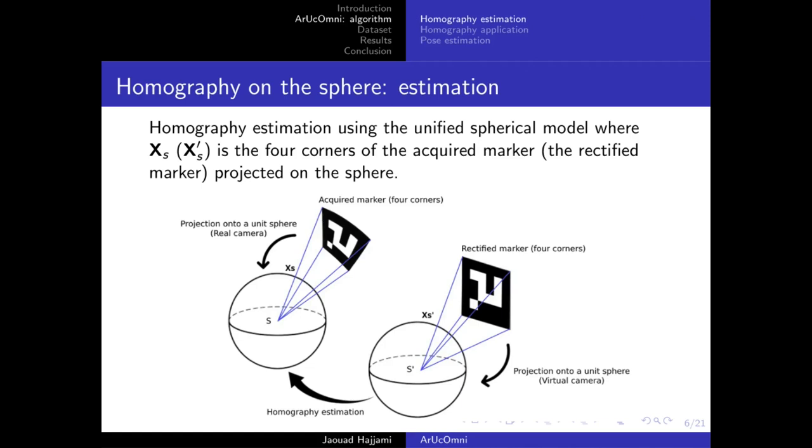For homography estimation, we have the rectified marker containing the canonical form of the marker, which is a new image with its own intrinsic parameters that we call the virtual camera. On the other hand, we've got the acquired marker, which is the potential marker detected on the image. The goal is to estimate the homography that maps one image to another.